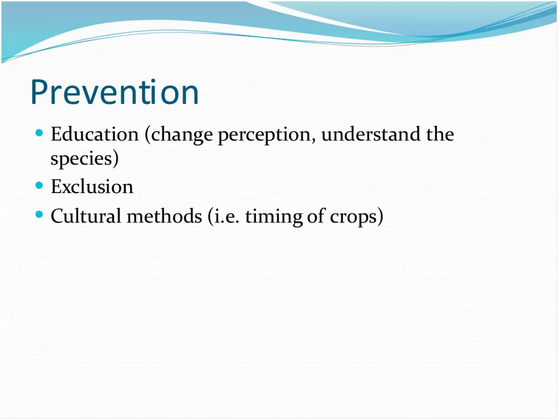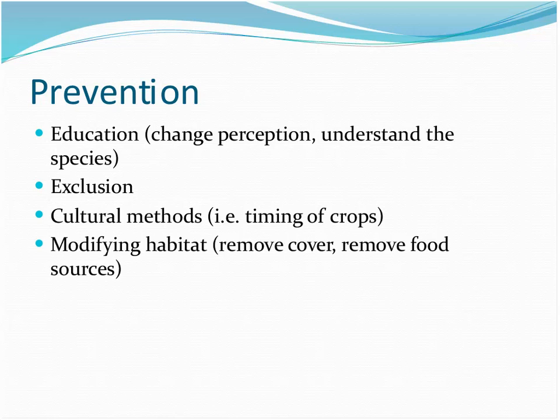Cultural methods are a little harder to incorporate. Timing of crops is one example — if you want to grow sunflowers in Texas, put them in during spring and get them out by mid-summer so migrating birds don't hit your crops as hard. Free-range chickens are fine, but if skunks are eating them, putting the chickens up at night in a skunk-proof coop would be an example of a cultural method.